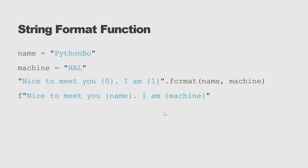You can also format strings. For example, 'name = Python' and 'machine = shell'. Using the format function, 'name' maps to curly braces 0 and 'machine' maps to curly braces 1, based on index order. The result would be 'Nice to meet you, Python, HAL machine.' A simpler way is to use an f-string: put f before the string and use the variable name directly in curly braces.